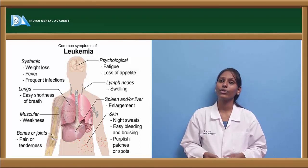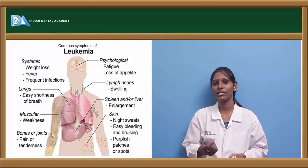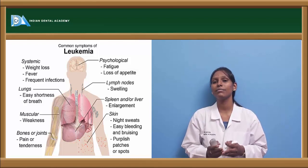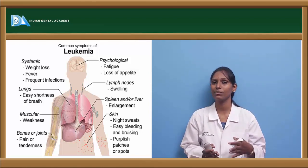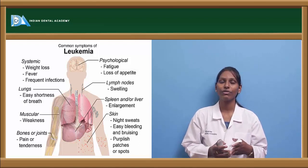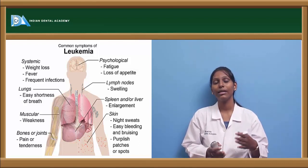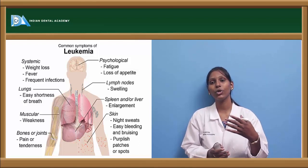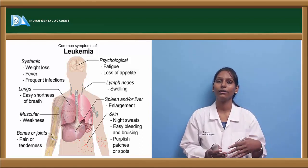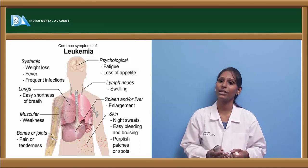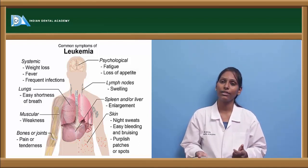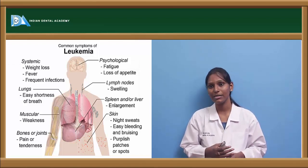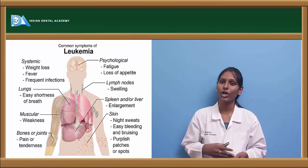The common symptoms of leukemia are systemic in nature. The most common symptoms are weight loss, anorexia, and fever. The most common clinical sign is lymphadenopathy, which is the first presenting sign in leukemias — cervical lymphadenopathy is usually seen. In some cases, cervical lymphadenopathy appears even before the onset of other leukemia symptoms. Other symptoms include lung involvement with shortness of breath, muscle weakness, and pain and tenderness of bones and joints.